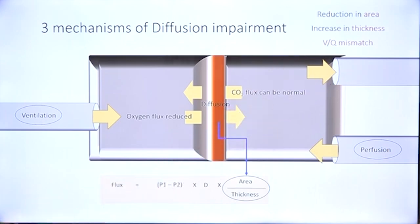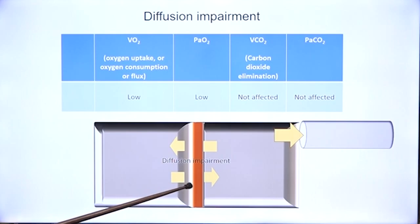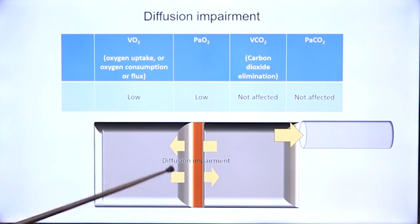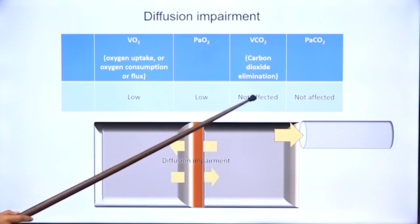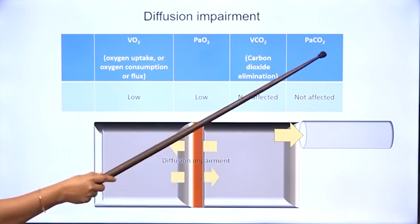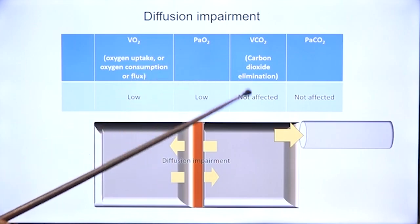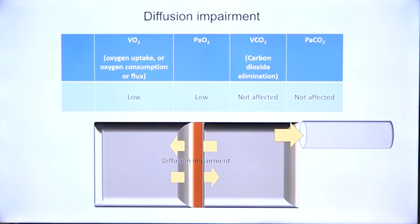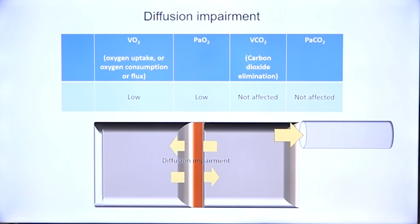This is the big lesson in respiratory physiology. In diffusion impairment due to reduction in surface area of the respiratory membrane, increase in thickness, or in VQ mismatch, oxygen uptake can be reduced and PaO2 can be low, but carbon dioxide elimination need not be affected and PaCO2 can be normal or even lower. This picture is what we describe as type 1 respiratory failure. Will there be respiratory acidosis? No, because carbon dioxide is normal — there is no respiratory acidosis in diffusion impairment.